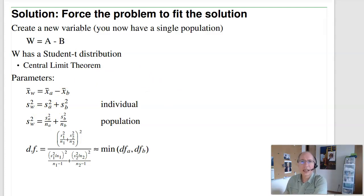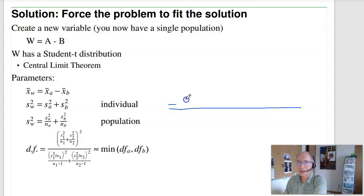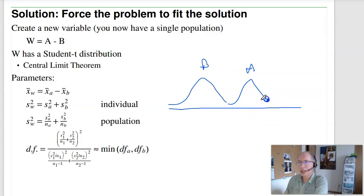Think about it this way: I've got populations A and B. They both have a mean and a standard deviation. When I take A minus B, I could have a large A and a small B, so the spread actually increases. That shows up here — you add the variances. There are actually two different types of standard deviations: for an individual or for a population.